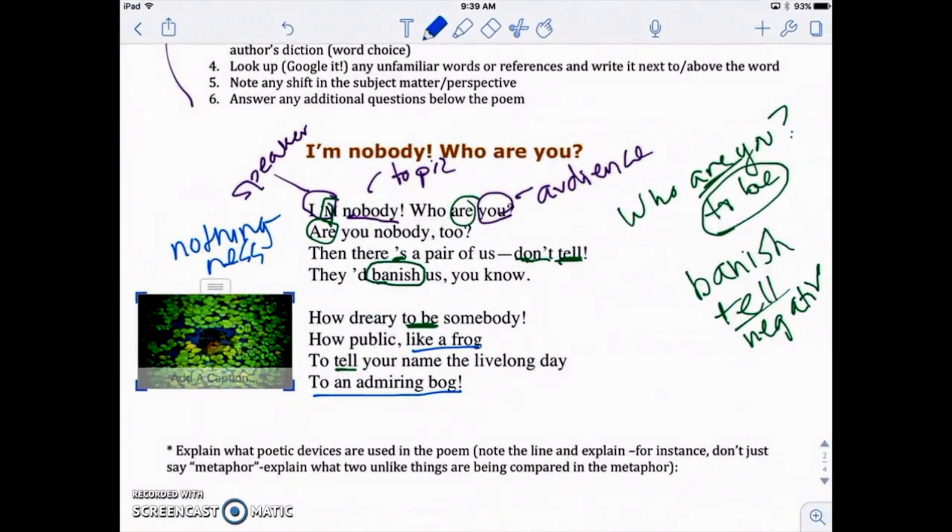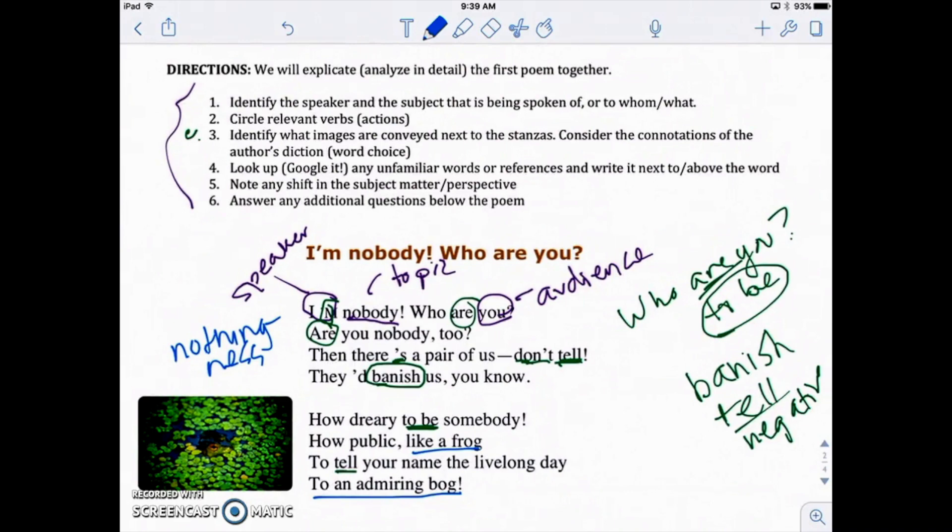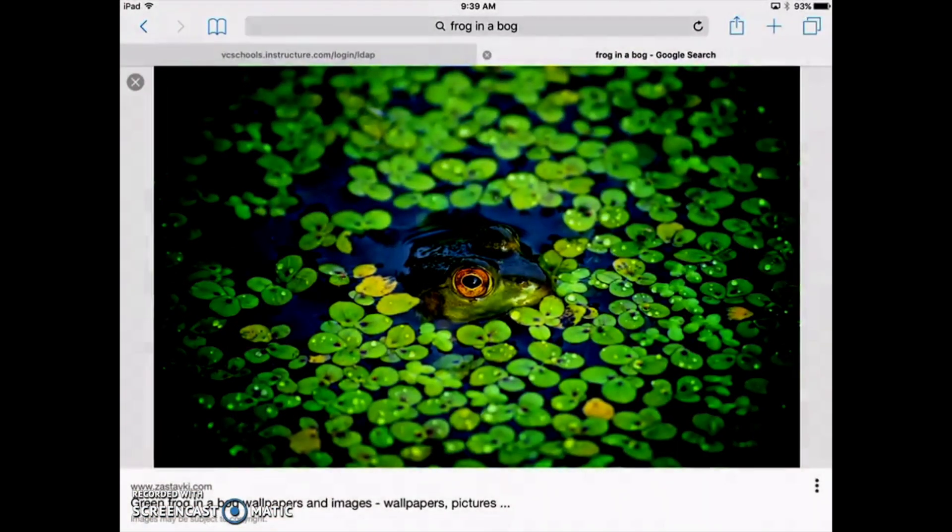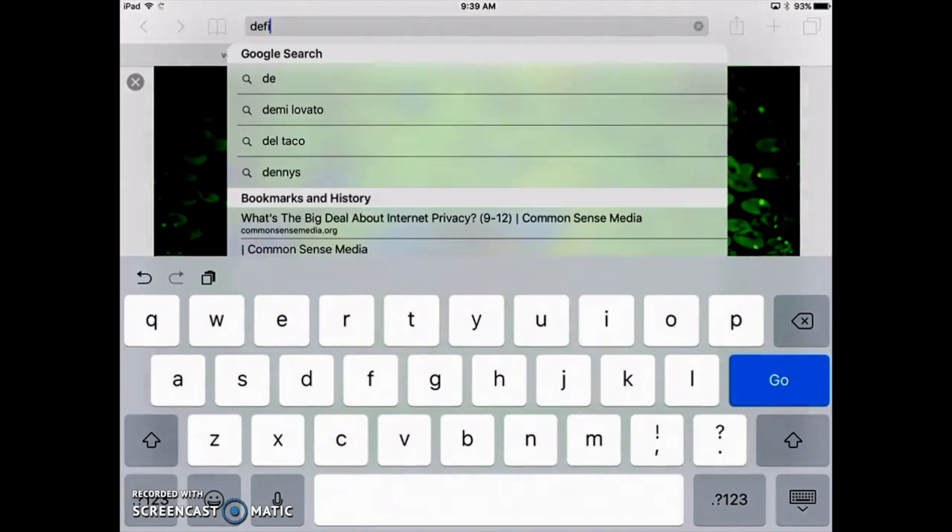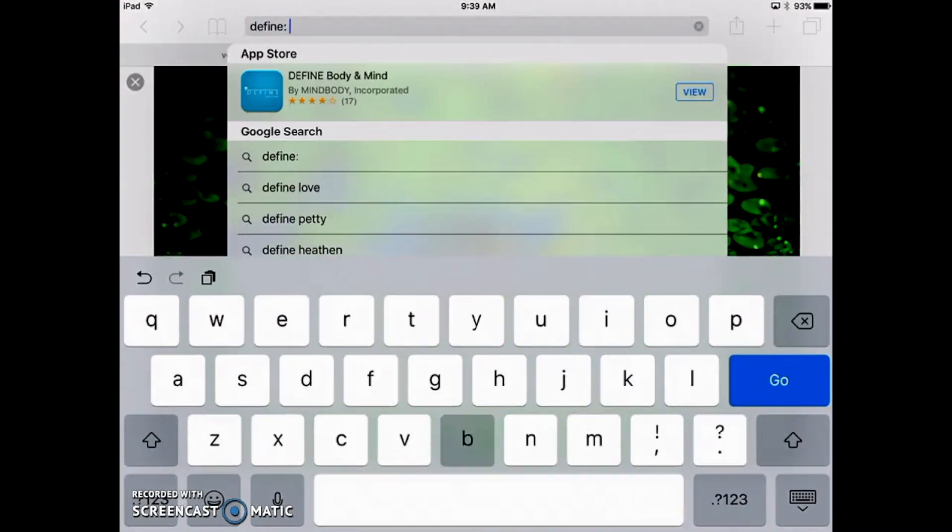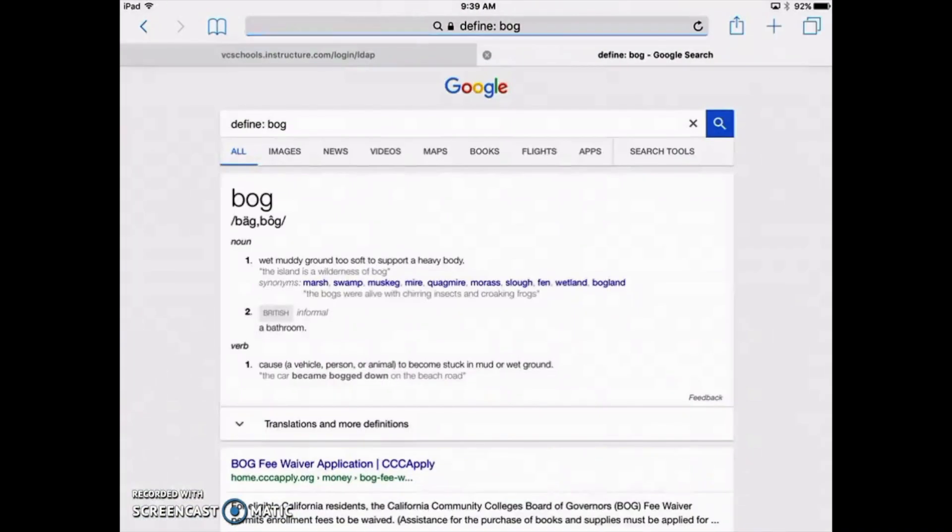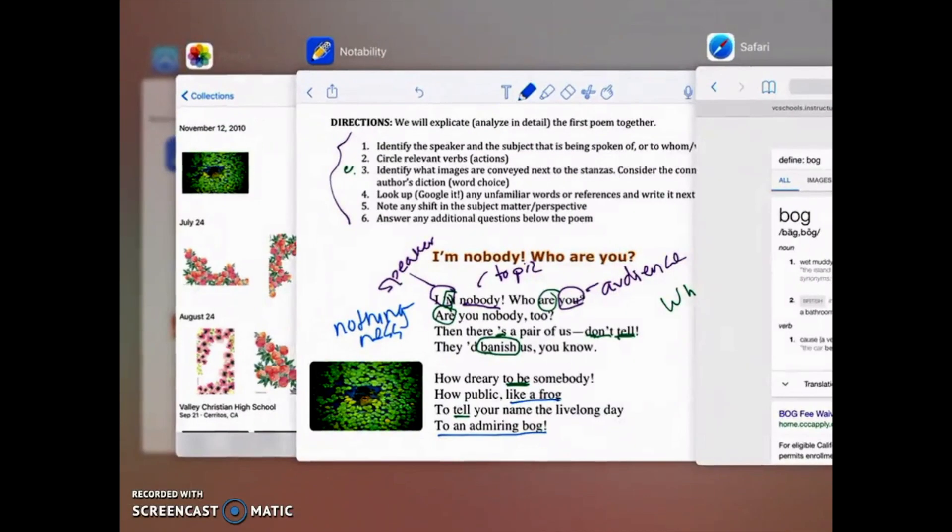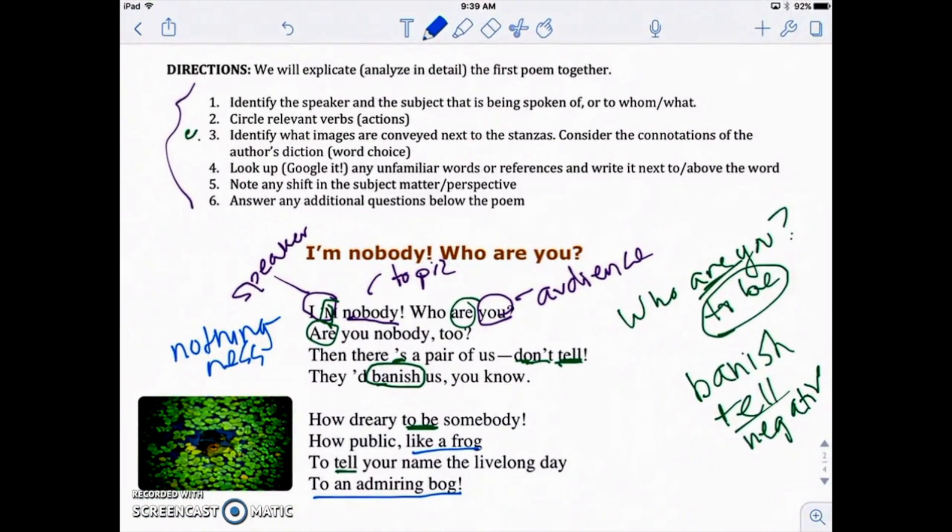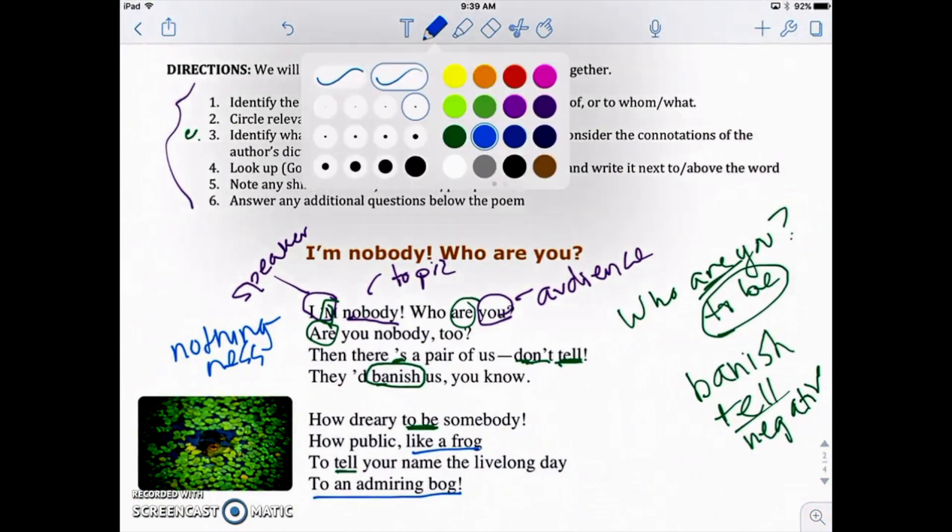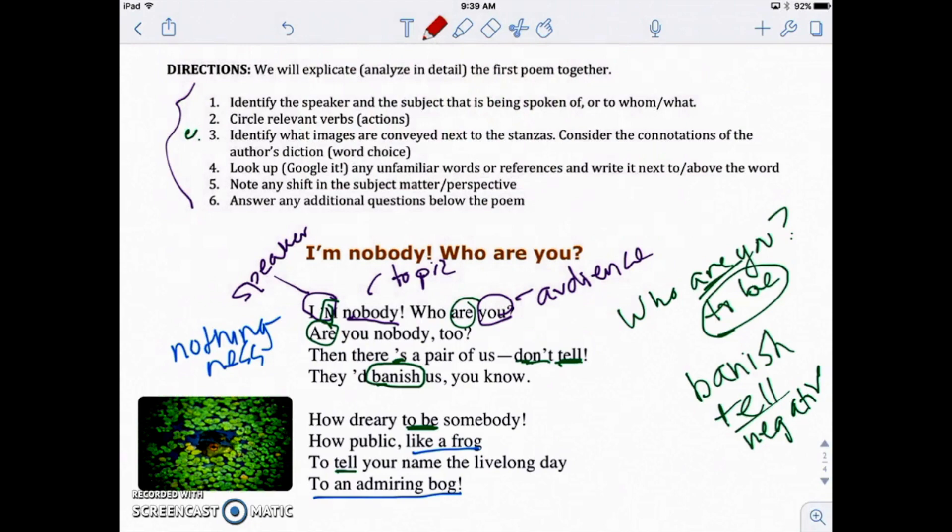But right now I'm just going to add, I took a little photo here. So here's my little photo of a frog. And again, you may not know what exactly a bog is. In fact, that's the next step that we're going to do. Step number four, again, if you look up here, it says look up or Google it any unfamiliar words or references and write it next to or above the word. So let's go ahead and look up bog because I think a lot of us maybe don't know that word. Oops, I'm going to push define and bog. We've got wet, muddy ground too soft to support a heavy body. Okay. So it's like a marsh or a swamp, swamp, excuse me.